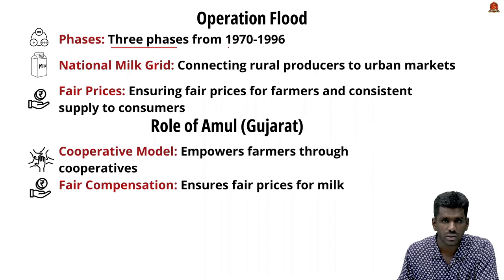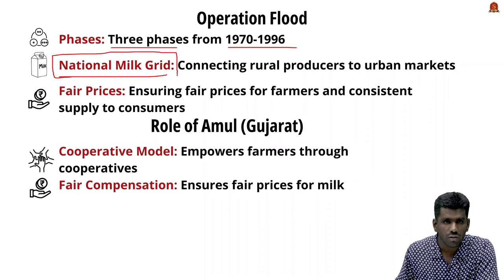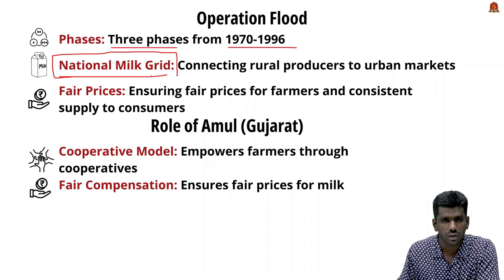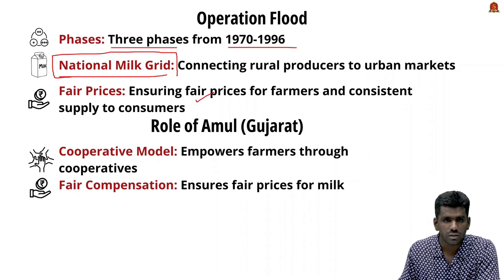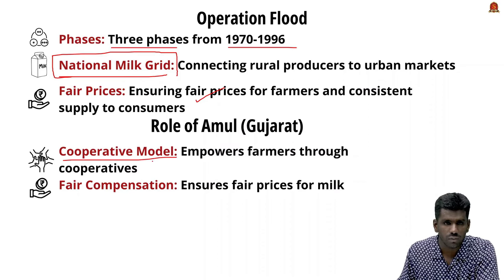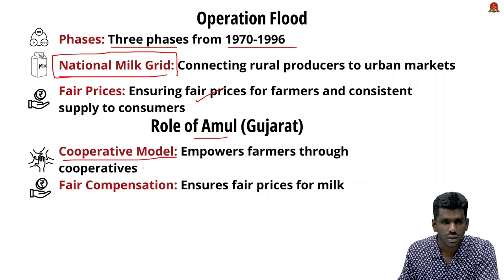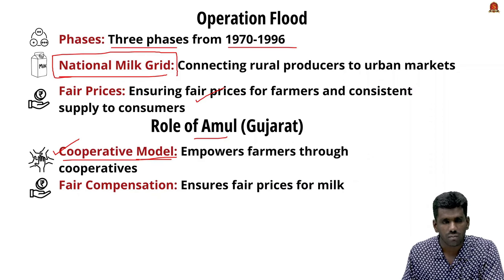Supported by the World Bank, Operation Flood happened in three phases from 1970 to 1996. It created a National Milk Grid by establishing cooperatives and connecting rural farmers to urban consumers, ensuring fair compensation for farmers and consistent milk supply for consumers. Under the White Revolution, a cooperative model of milk production was created — the best example being Amul — which empowered rural farmers through cooperatives, gave them ownership of milk production, and eliminated middlemen.